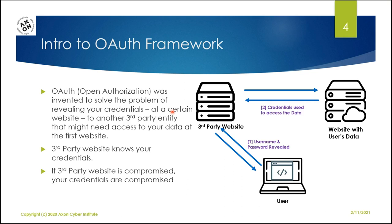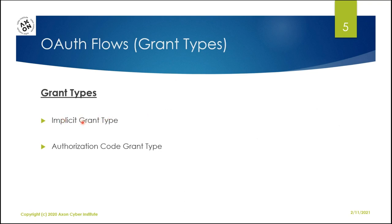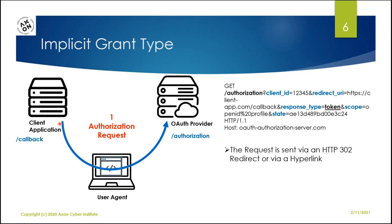Let's look at how OAuth solves this problem. There are two scenarios of implementation. The first is called the implicit grant type, which is simpler, and the second is the authorization code grant type, which is more complex and more secure. In the implicit grant type, the OAuth provider on the right is something like google.com, Facebook, or LinkedIn — any of these social media websites. The client application is the third party who would like to access a portion of your data that exists on the OAuth provider.